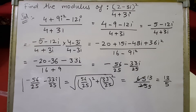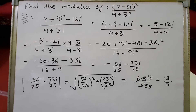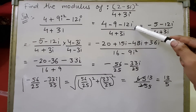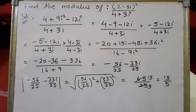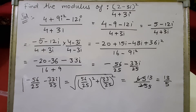Let's see another example. We have to find the modulus of the complex number (2 minus 3i) squared, all upon 4 plus 3i. First we simplify the given expression. Squaring 2 minus 3i gives 4 plus 9i squared minus 12i, all upon 4 plus 3i. Substituting i squared equals minus 1, we get 4 minus 9 minus 12i upon 4 plus 3i, which simplifies to minus 5 minus 12i upon 4 plus 3i.